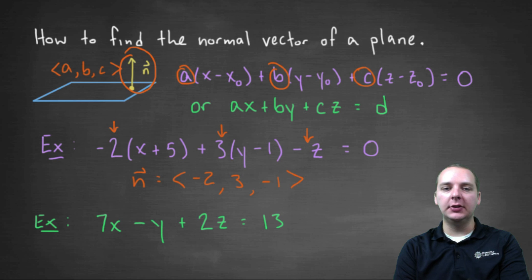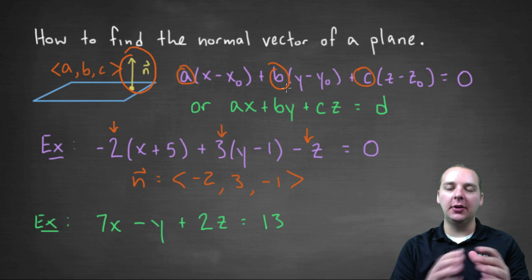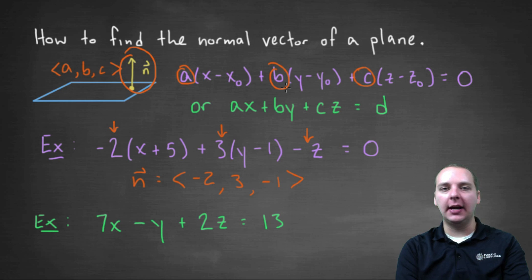If your equation is written in what's called general form, it's just as easy. If you have ax plus by plus cz equals d, if those terms in standard form are rearranged, it's not any more difficult. It's still the coefficient of x, the coefficient of y,